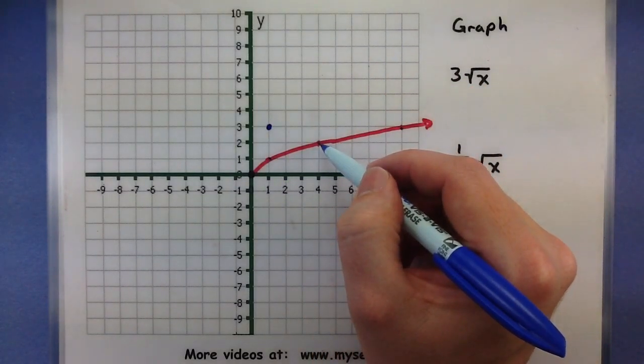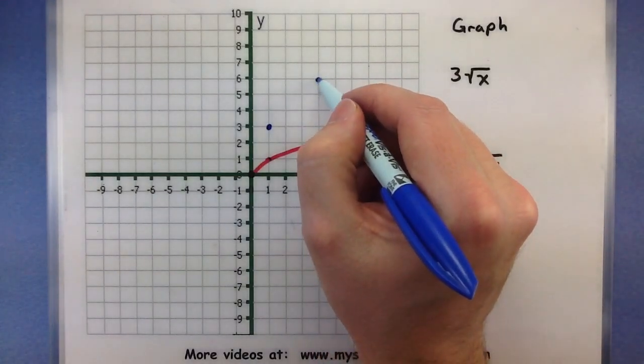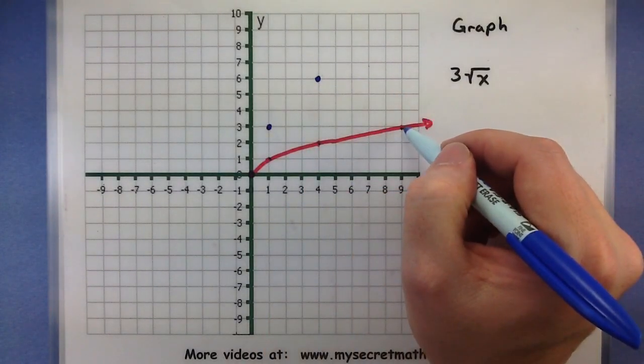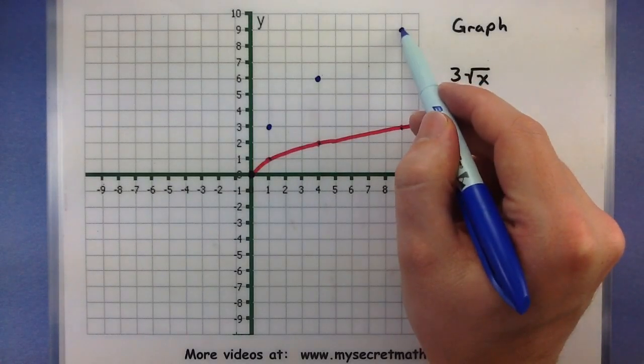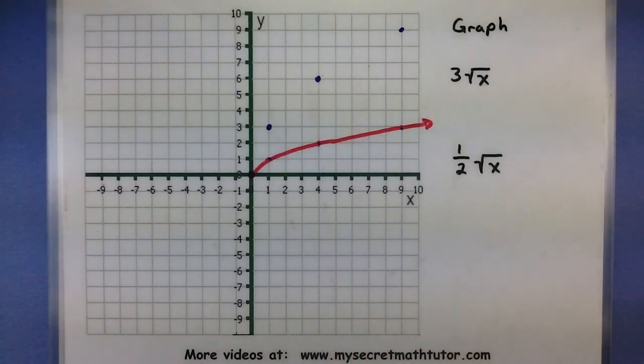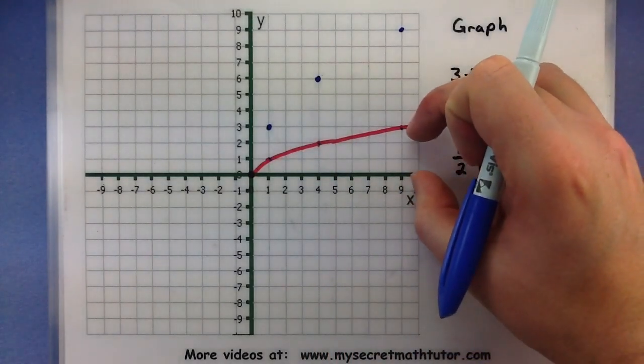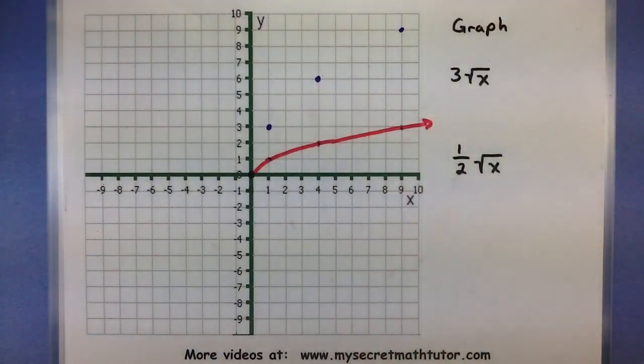The y value here is 2, 2 multiplied by 3 is 6, so we'll move that guy up to 6. And lastly, the y value here is 3, 3 times 3 is 9. So every single y value has been multiplied by 3.